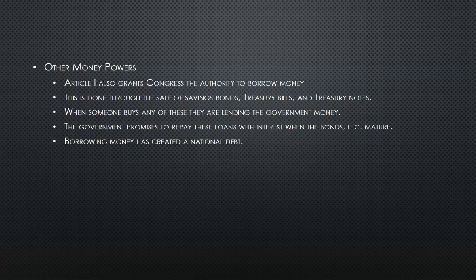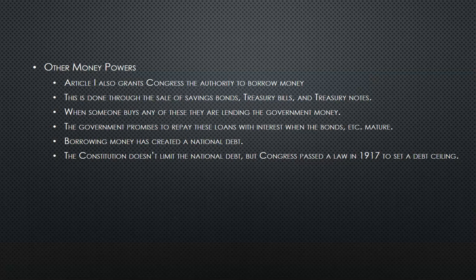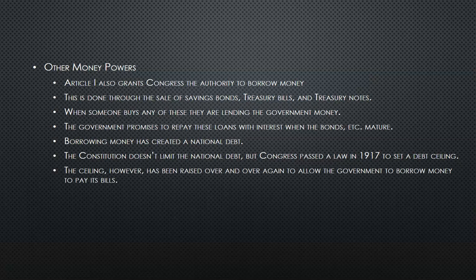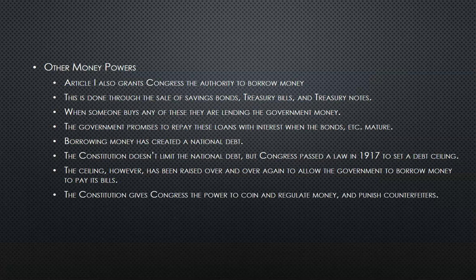Borrowing money has created a national debt. The Constitution does not limit the national debt, but Congress passed a law in 1917 to set a debt ceiling — to say that the debt can only go up to a certain amount. The ceiling, however, has been raised over and over again to allow the government to borrow more money to pay its bills. The Constitution gives Congress the power to coin and regulate money, to punish counterfeiters, and to make bankruptcy laws.